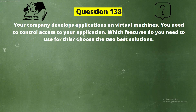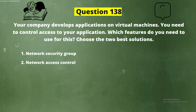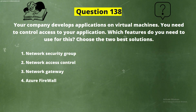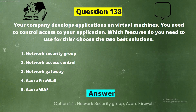The options are: Option 1, Network Security Group; Option 2, Network Access Control; Option 3, Network Gateway; Option 4, Azure Firewall; Option 5, Azure WAF. The correct answers are Option 1, Network Security Group, and Option 4, Azure Firewall.